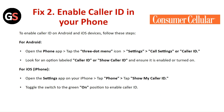Fix 2: Enable the Caller ID on your phone. To enable caller ID on an Android or iOS device, follow these steps. For Android, open the Phone app, tap the three-dot menu icon and select Settings, go to Call Settings or Caller ID, and look for an option labeled Caller ID or Show Caller ID and ensure it is enabled. For iOS, open the Settings app on your iPhone, tap Phone, then tap Show My Caller ID, and toggle the switch to the green on position to enable caller ID.